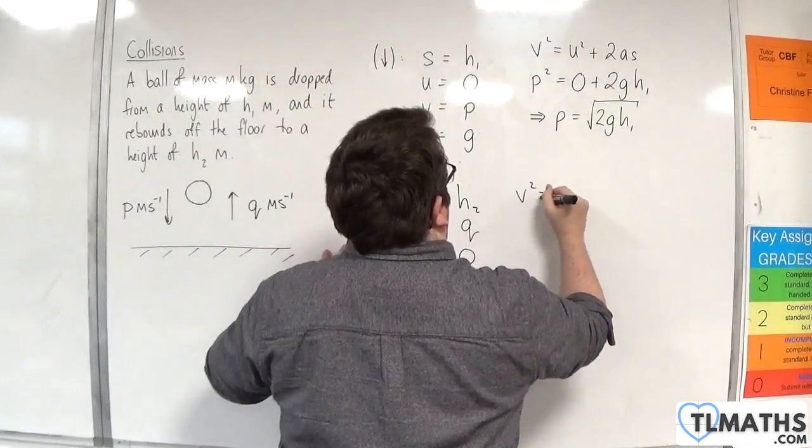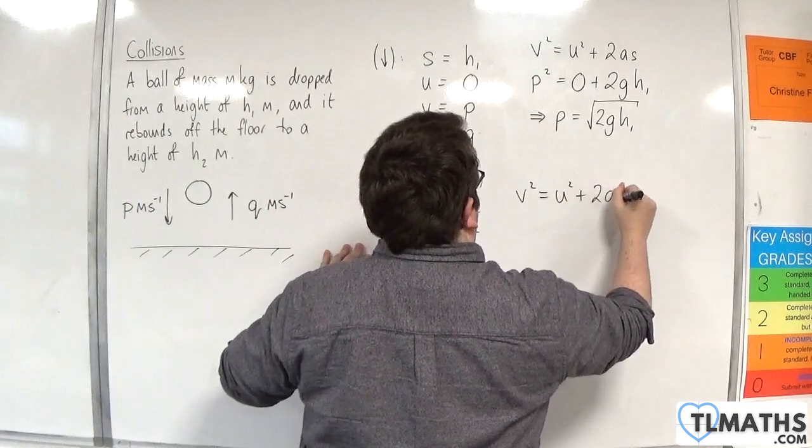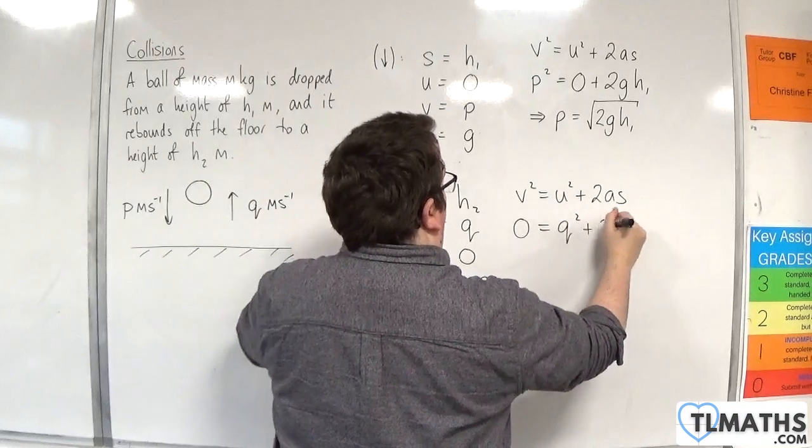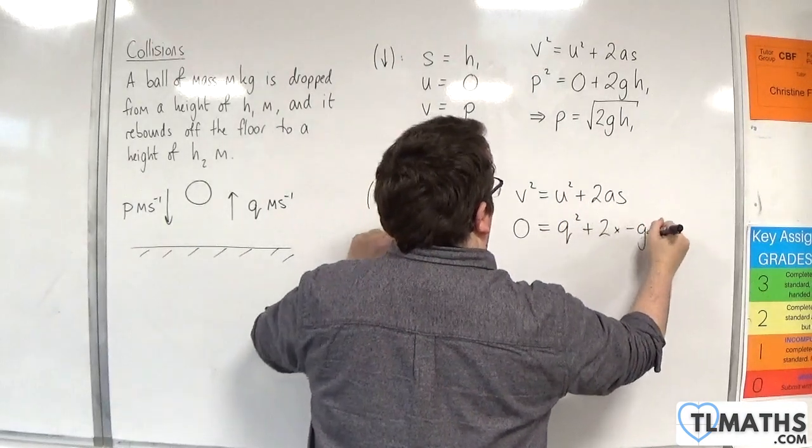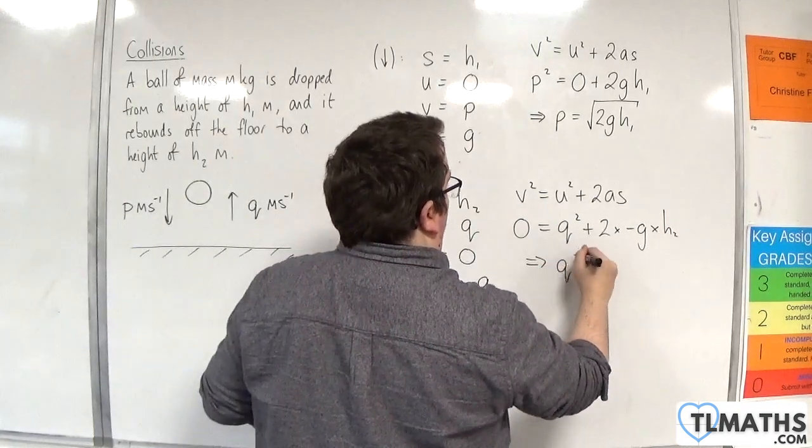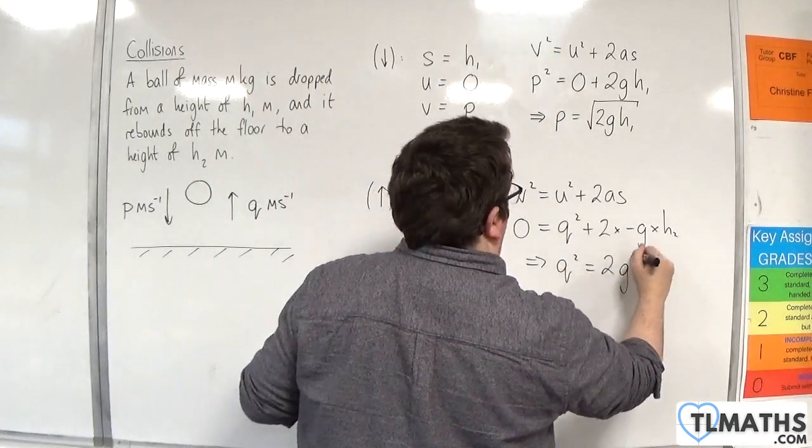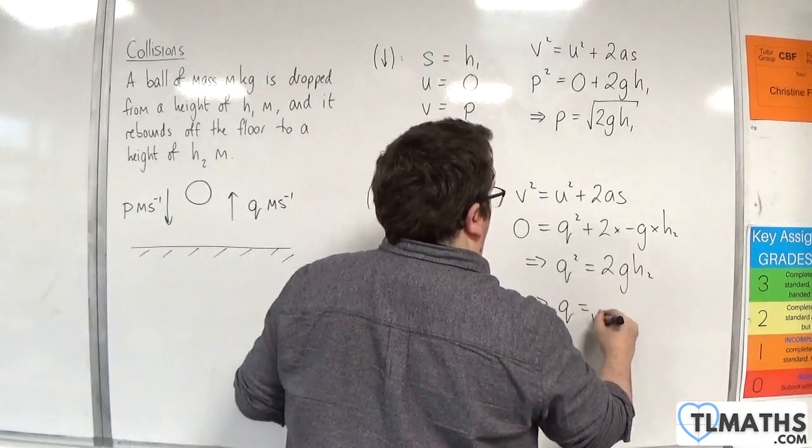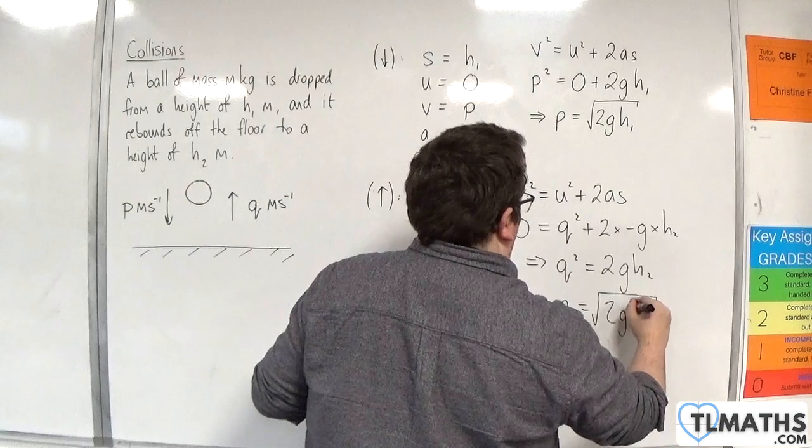So v squared equals u squared plus 2as. So zero is going to be equal to q squared plus 2 times minus g times h2. So q squared will be 2gh2. So q will be the square root of 2gh2.